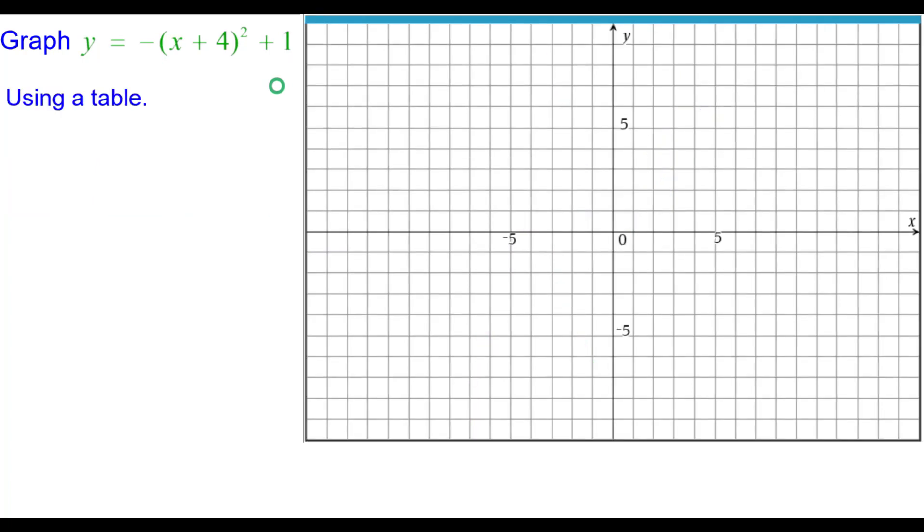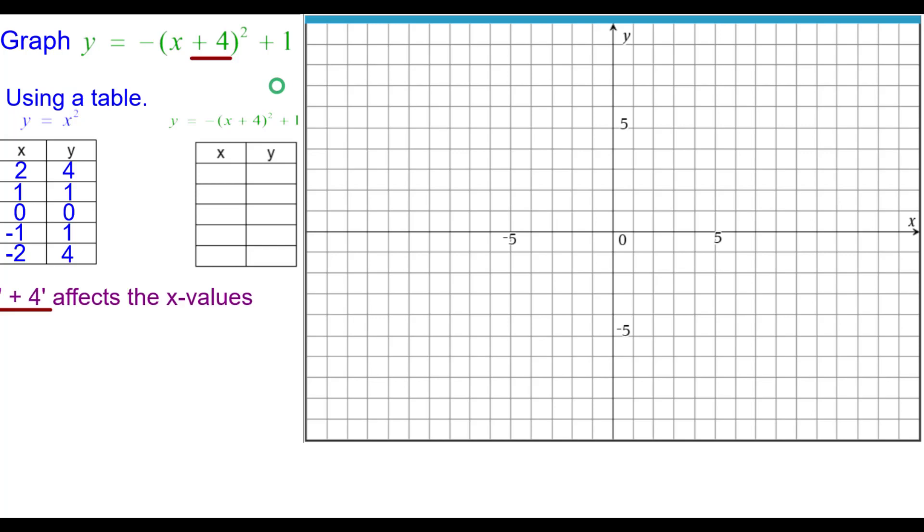Using a table, here's our traditional 5-point parabola table. The plus 4 inside the parentheses affects the x values. It shifts the points left 4. And so that means that we need to subtract 4 from each x value to shift to the left.